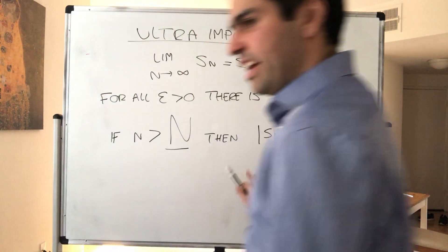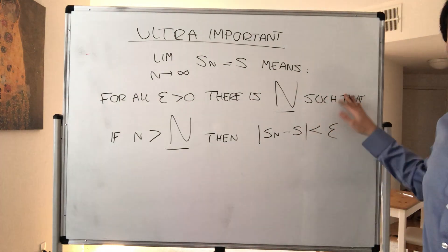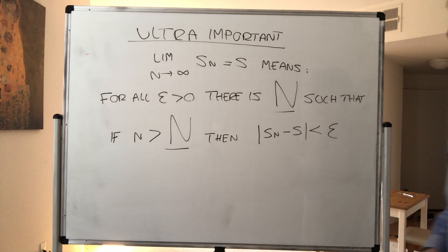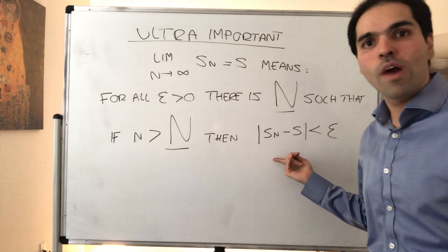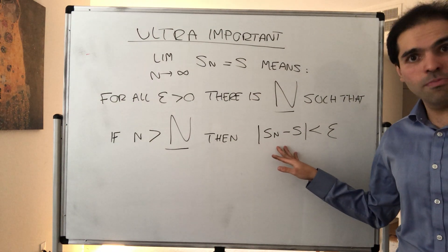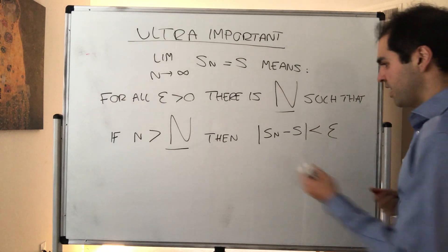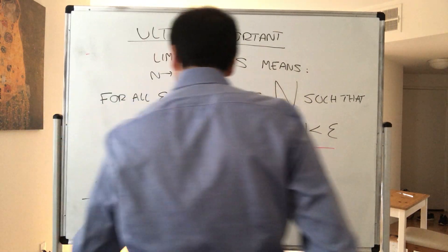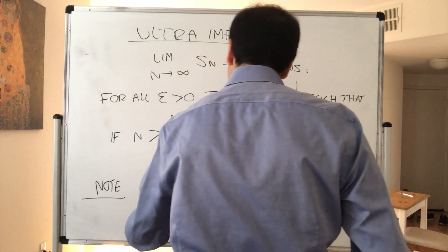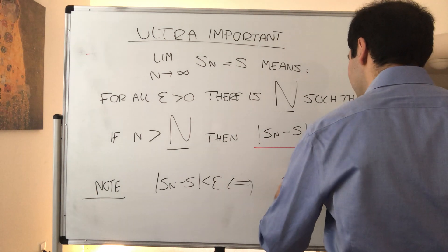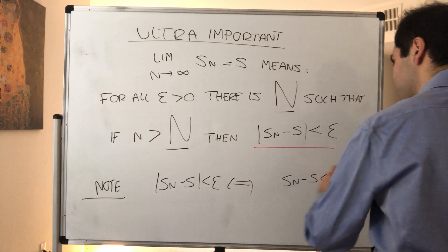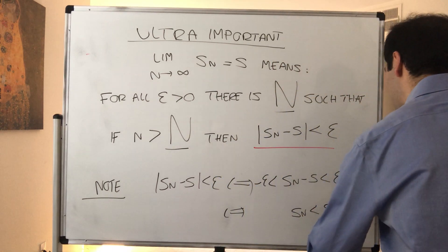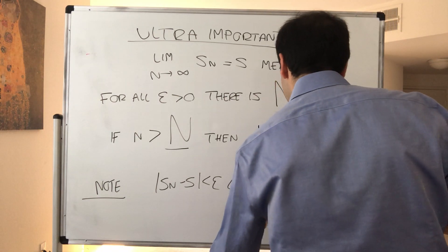Note that |Sn minus s| less than epsilon is the same as saying Sn minus s is between negative epsilon and epsilon, which is just the same as saying Sn is less than s plus epsilon and greater than s minus epsilon.